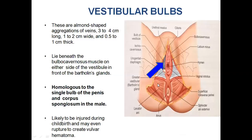Now coming to the vestibular bulbs. These are almond-shaped aggregations of veins, 3 to 4 cm long, 1 or 2 cm wide, and 0.5 to 1 cm in thickness. They lie below the bulbocavernosus muscle on either side of the vestibule, in front of the para-urethral glands. It is homologous to the single bulb of the penis and corpus spongiosum in males. It is likely to be injured during childbirth and may even rupture to create vulval hematoma.